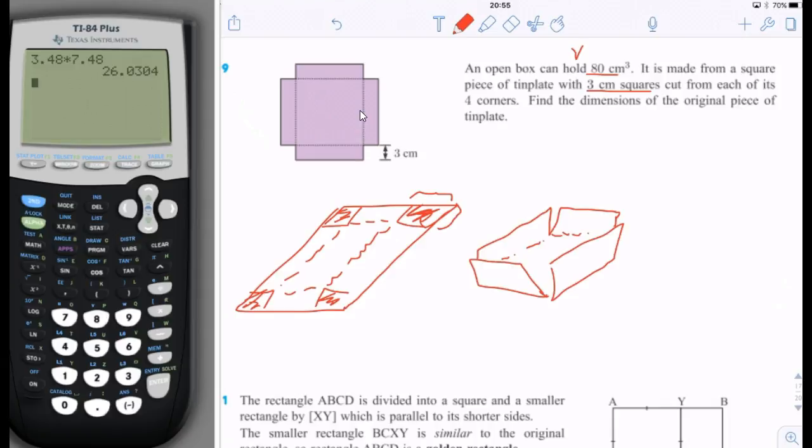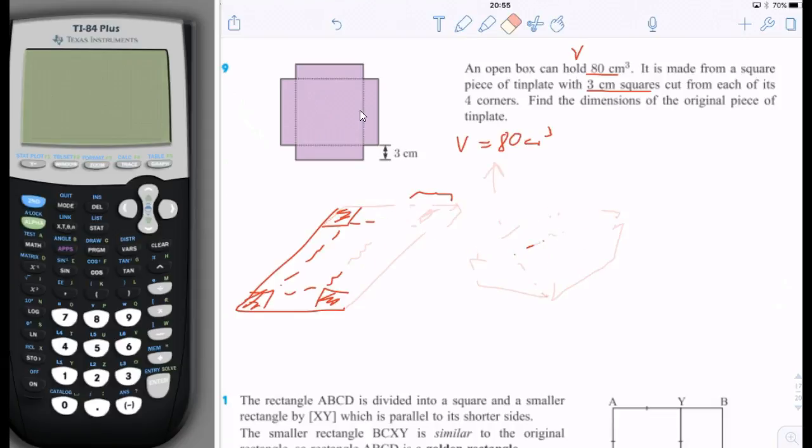This box here has a volume of 80 centimeters cubed. Now I'm going to erase these pictures so I have more room to work. We know that the volume of the folded up box is 80 centimeters cubed. Do you remember that the volume, the formula to find the volume is length times width times height?